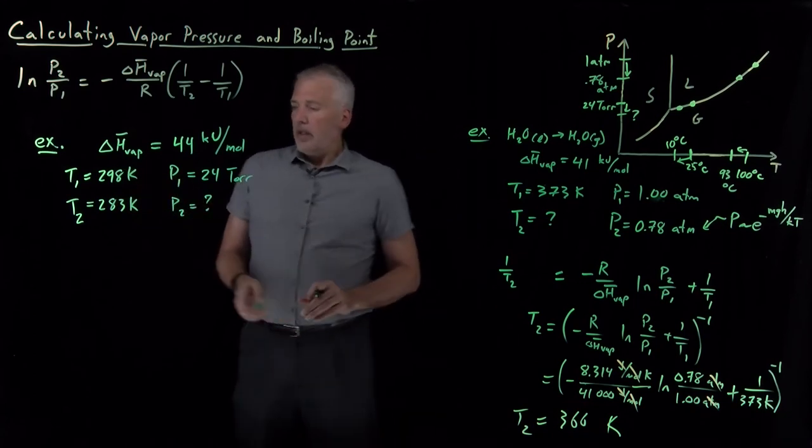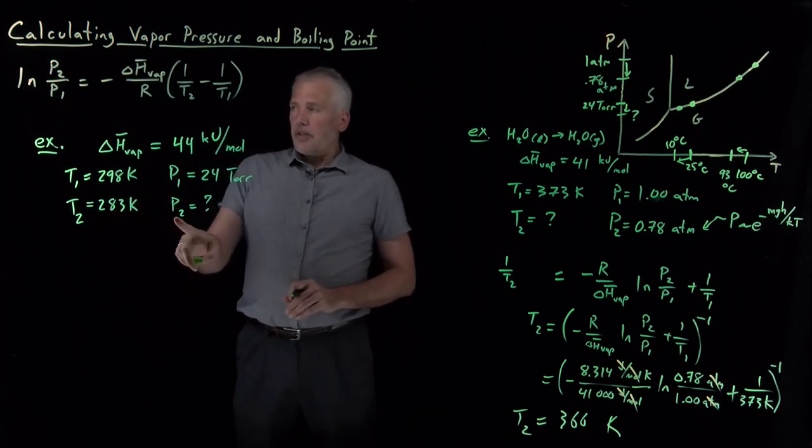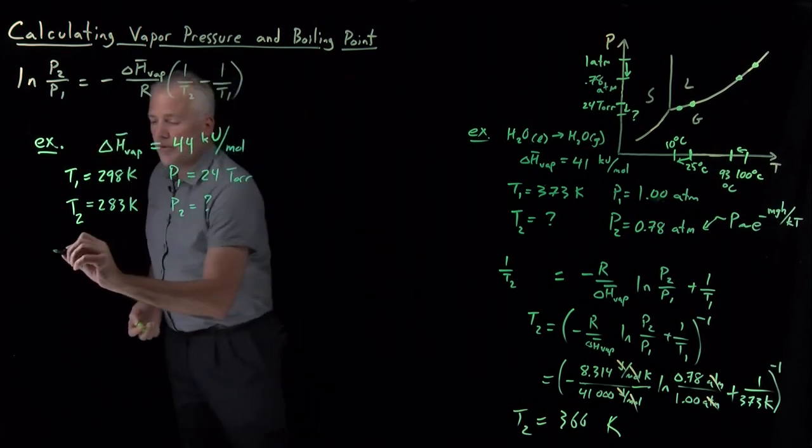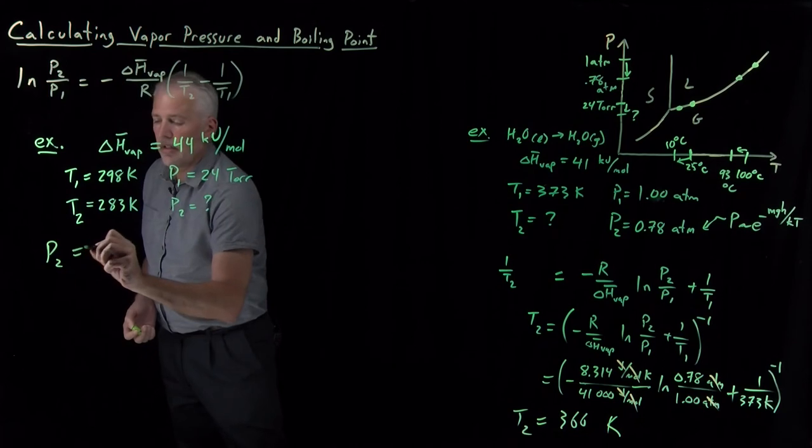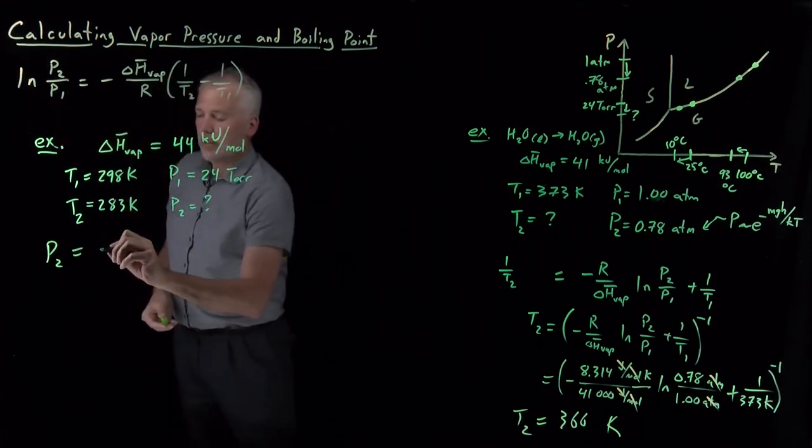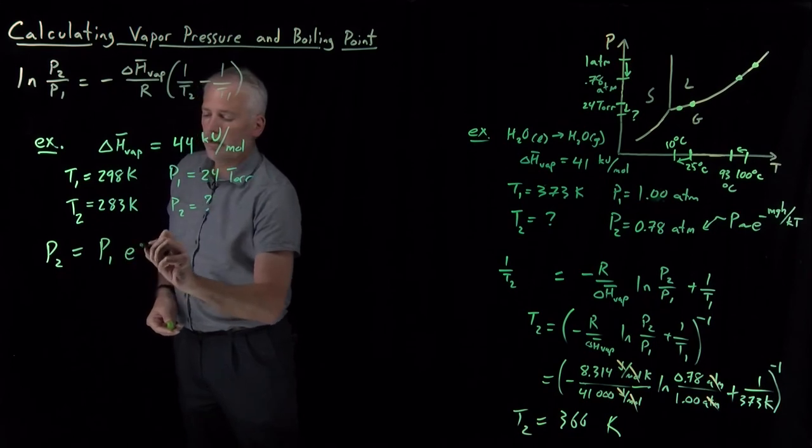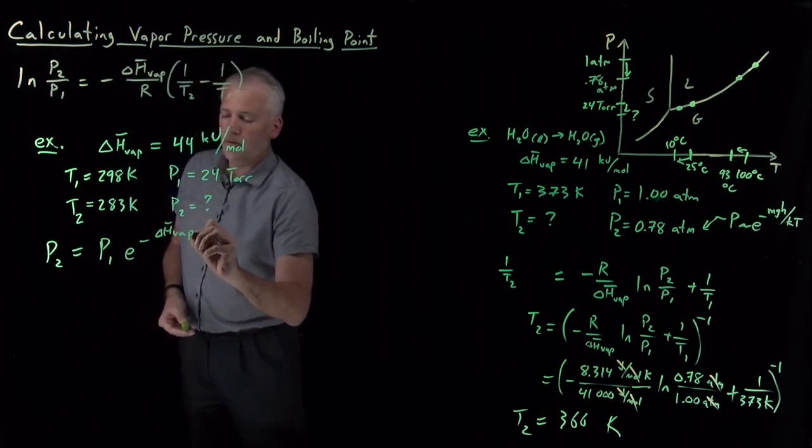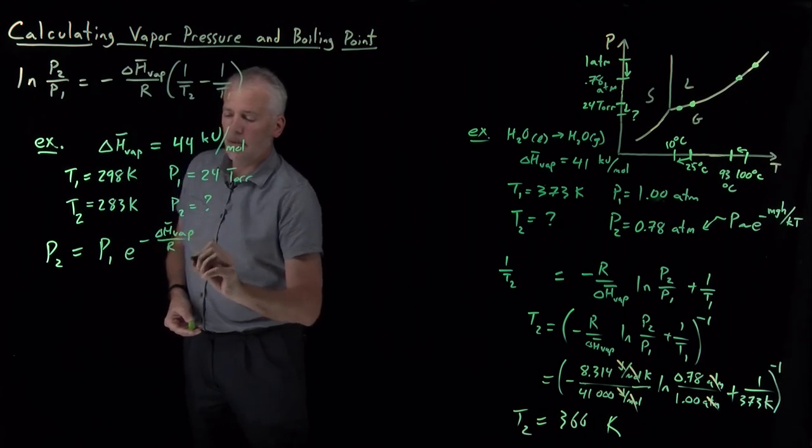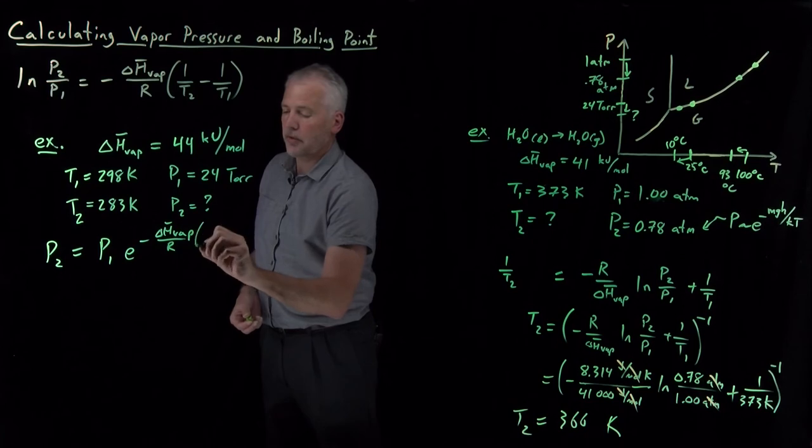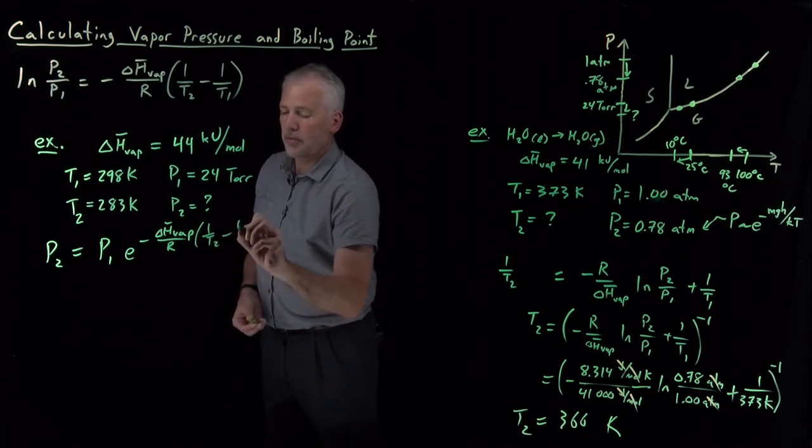So we'll talk in the next video actually about why that is, why the enthalpy of vaporization is different at different temperatures. But for now, we'll just take that as a number that we've looked up or been given 44 kilojoules per mole to evaporate water at 298 Kelvin in this vicinity. So we have everything we need now to solve for P2. If I rearrange this equation, the form I'd rather use it in is the form I get by exponentiating both sides of this equation. P2 is equal to P1 times the exponential of minus enthalpy of vaporization over R, 1 over T2 minus 1 over T1.